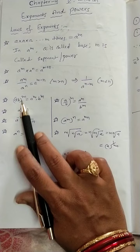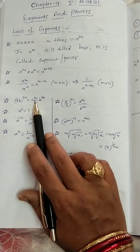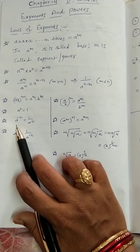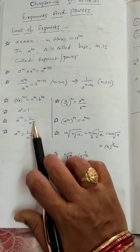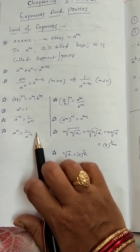Now, AB whole power M, A power M into B power M. Here, any symbol or there means into symbol it is. A power 0 is always 1. A power minus N is 1 by A power N. A power N is equal to 1 by A power minus N.